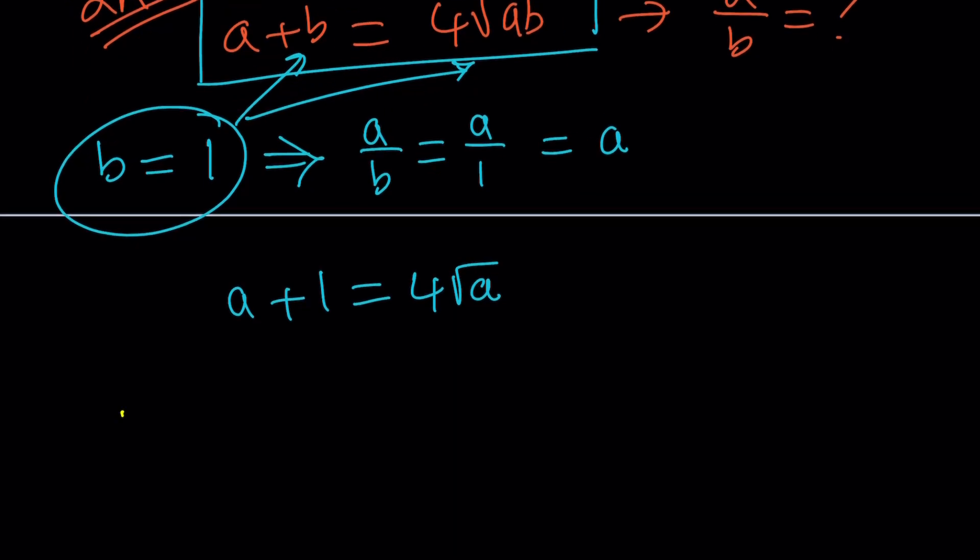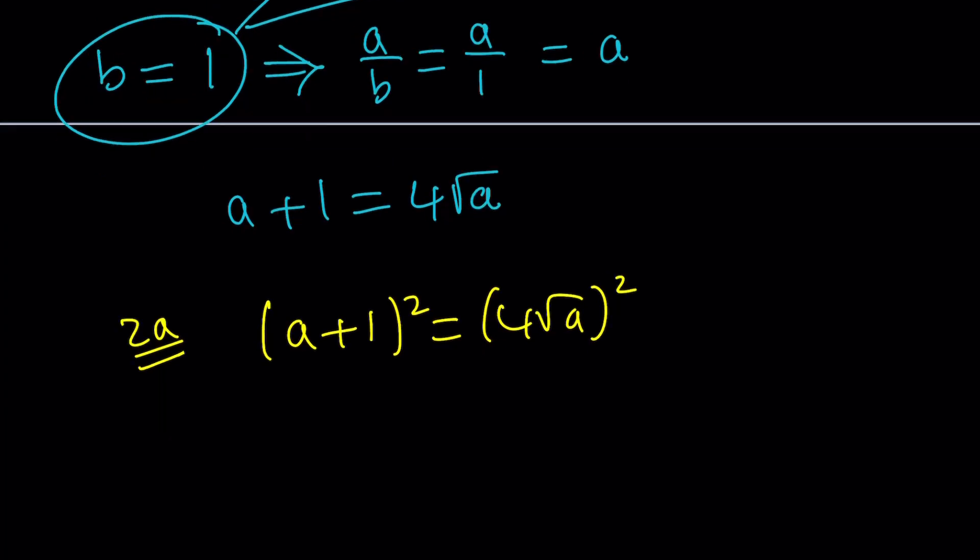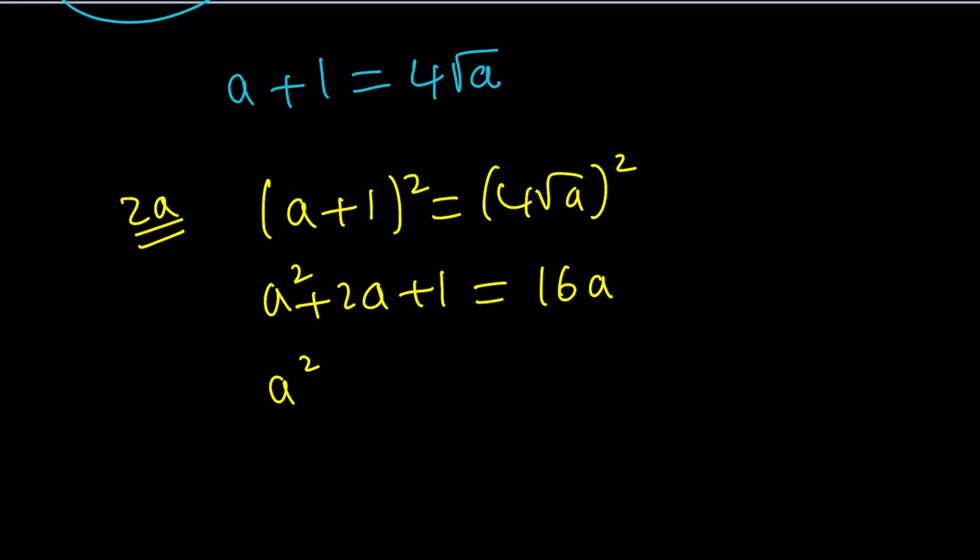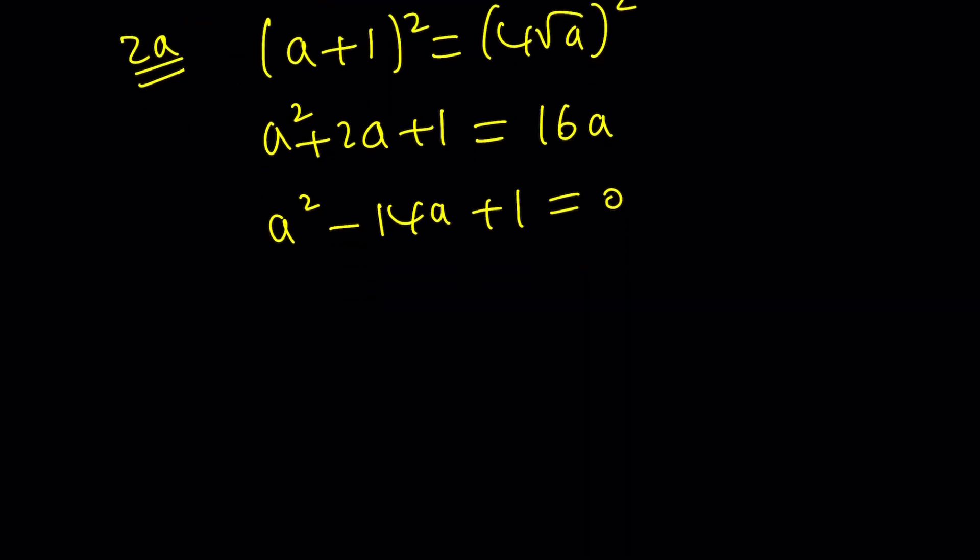2A is basically getting rid of the radical, because that's what I said first. First, square both sides, and then you're going to get rid of the radical and just solve it as a quadratic. A squared plus 2A plus 1 equals 16A. Bring the 16 over. A squared minus 14A plus 1. You can, again, complete the square if you like it, or you can go ahead and just use the quadratic formula, because this is quadratic. Negative B plus minus the square root of B squared, which is 196, minus 4AC, which is 4, divided by 2A, which is 2.